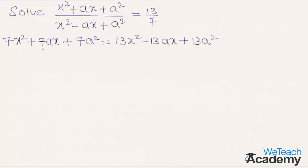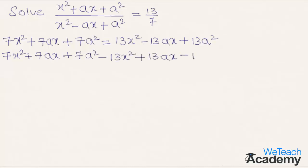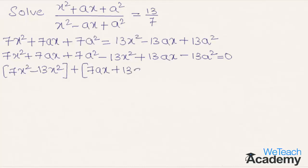Now let us bring the terms of the RHS to the left hand side. All the symbols get changed and we can write this as 7x squared plus 7ax plus 7a squared minus 13x squared plus 13ax minus 13a squared equal to 0. Now let us group the like terms: 7x squared minus 13x squared, then 7ax plus 13ax, and 7a squared minus 13a squared equal to 0.